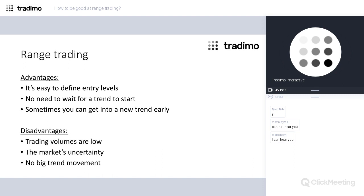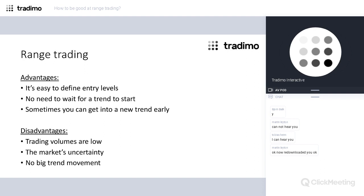Range trading has its pros and its cons. The main advantage is that we can easily define the upper and lower borders of the range, because that can be done with visual analysis and with indicators as well. If we see that this is a range — and we'll see that on the charts — the strategy of range trading is rather clear: buying in the lower part of the range and selling in the upper part.